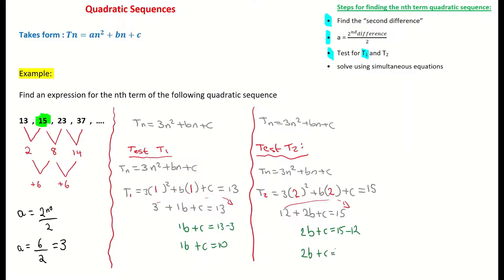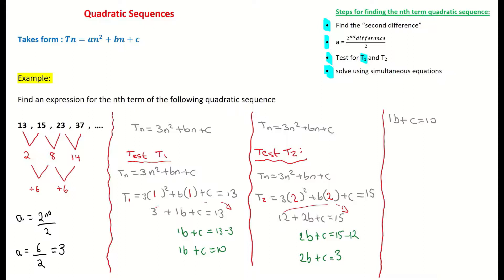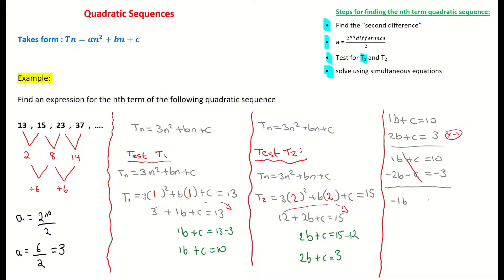At this stage I have two equations in b and c, so I'm going to use simultaneous equations to solve. Setting them up: 1b plus c equals 10, and 2b plus c equals 3. The c terms are the same, so I multiply the bottom line by minus 1 to make one negative. That gives: b plus c equals 10, and minus 2b minus c equals minus 3. Adding: b minus 2b gives minus 1b, and c minus c is 0, so minus b equals 7, meaning b equals negative 7.